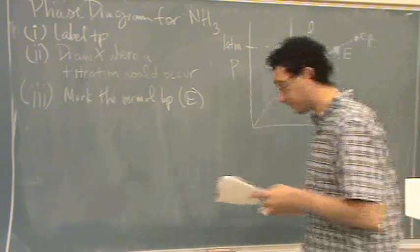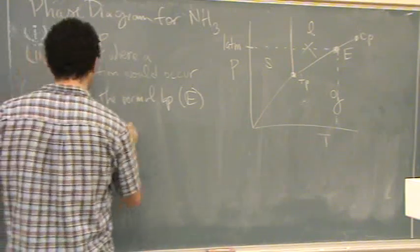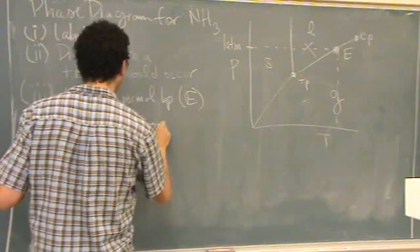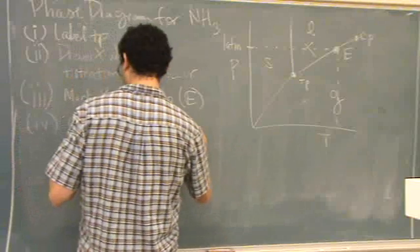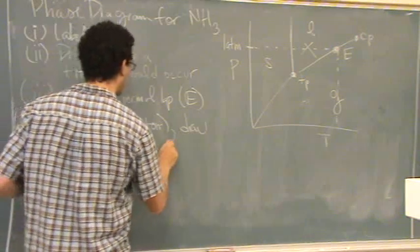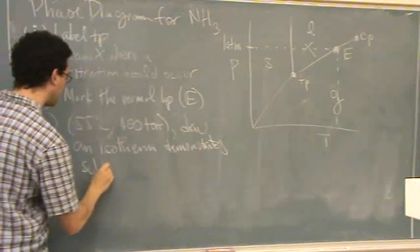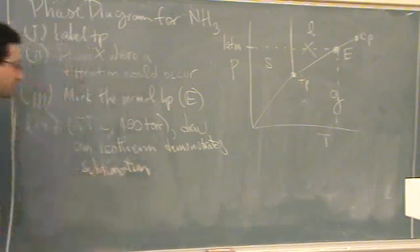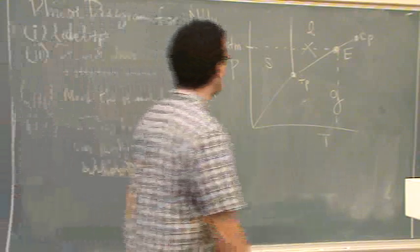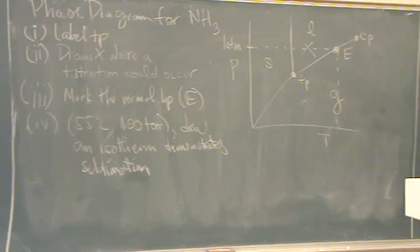Part IV. It gives you the point 55 degrees C and 400 TOR. Draw an isotherm that demonstrates sublimation. Okay? So we need an isotherm. That means something that's going to be a vertical line. Isotherm means temperature is constant.